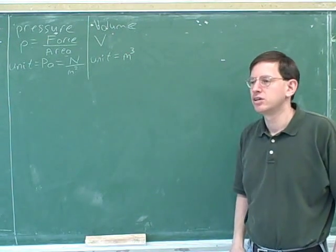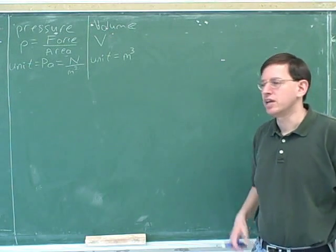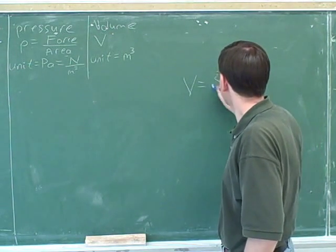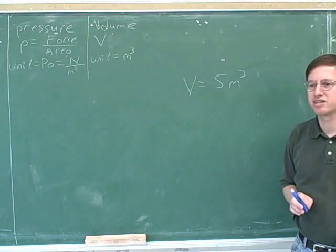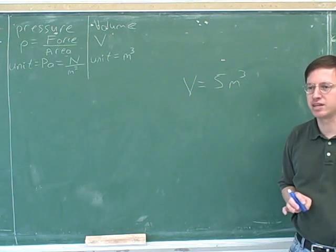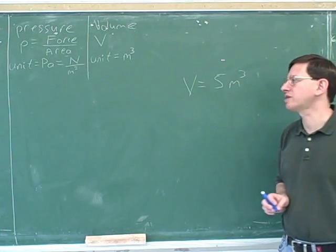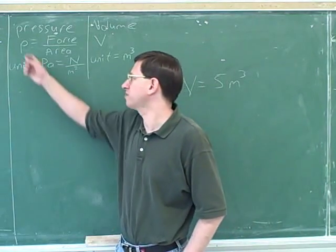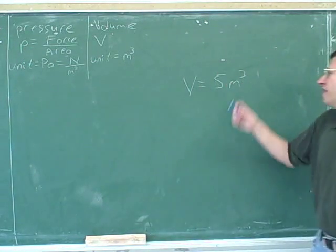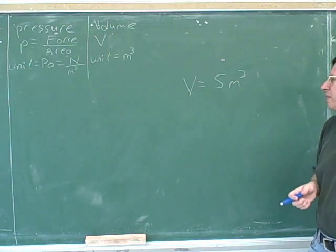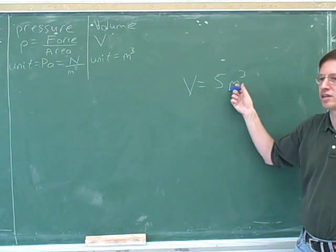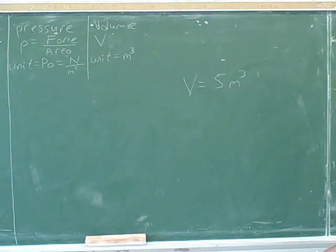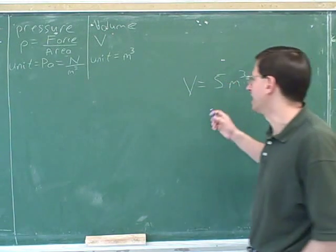In our analogy — ping pong balls flying around inside a cardboard box — if we say the volume V is 5 cubic meters, that means the box has a volume of 5 cubic meters. So V refers to the volume of the container. Pressure came from the impacts of ping pong balls on the sides of the box, and V is the volume of that container.